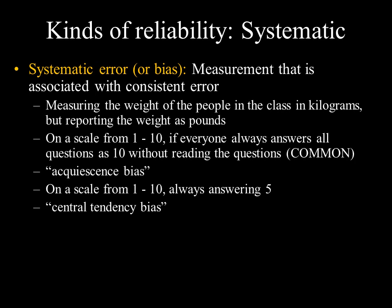Moving on to types of reliability, the first is systematic error, also called bias. This is measurement associated with a consistent error. For example, if you took a scale bought in the United States to France and reported people's weight in kilograms, the problem is the American scale measures in pounds — so everyone gets the wrong answer because the scale is not appropriate for the French context. That would be systematic bias.